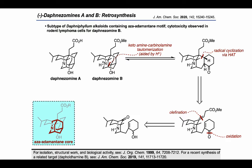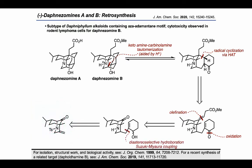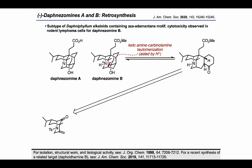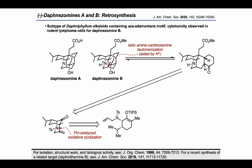Going back further, the authors envisioned using a diastereoselective hydroboration and Suzuki-Miyaura coupling to append the cyclohexenone fragment to a 1,1-disubstituted alkene. This bicyclic intermediate was then proposed to arise from a palladium-catalyzed oxidative cyclization, which could be carried out on a monocyclic precursor. Finally, the authors proposed using allylic amination chemistry developed by Sharpless to arrive at this type of intermediate starting from commercial carvone.